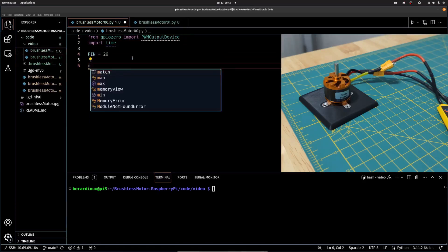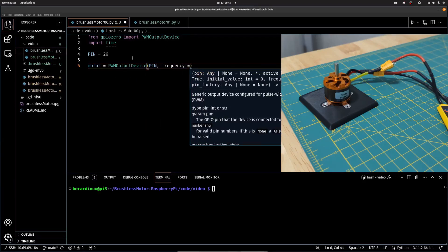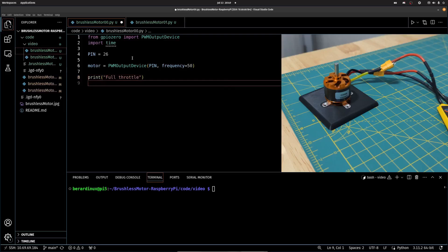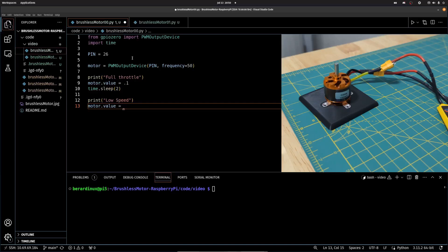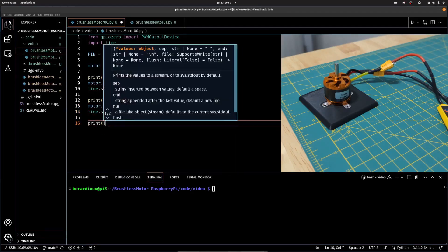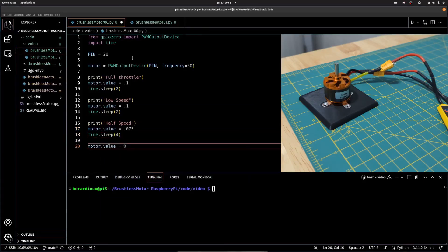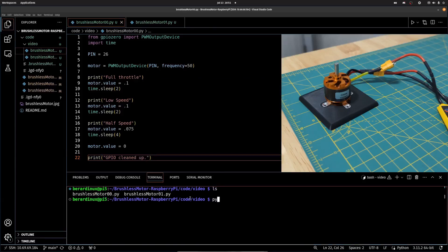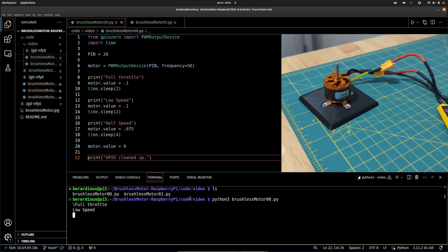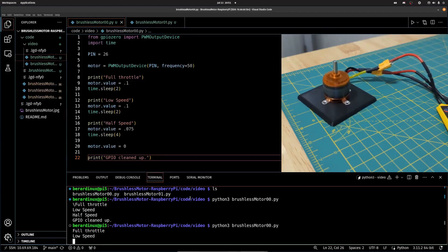We're going to have to set our pin variable to 26. We're going to make another variable called motor, which is just PWM output device. Put in our pin variable, which is going to be our pin 26. And also we're going to set our frequency to 50. And this python script here is going to be our initialization script. So, the first thing we're going to have to do is do full throttle, which is going to be 10% PWM signal. So, I'm just going to be putting a .1 because it's 10% of 1. And with GPIO0, it's just going to be in between 0 and 1. 1 would be 100% duty cycle, 0 would be 0 duty cycle.